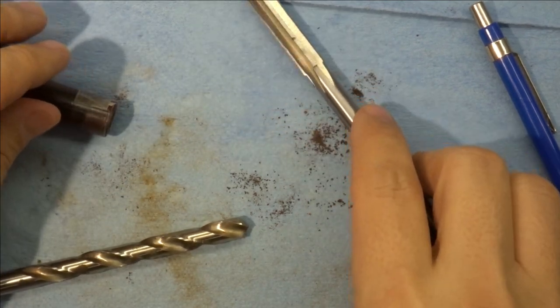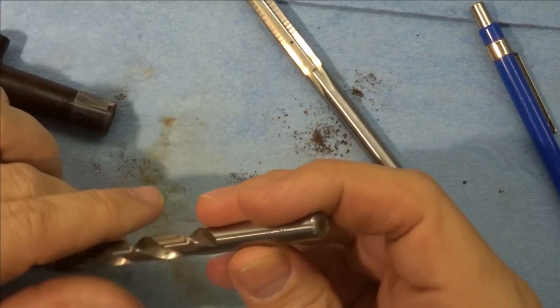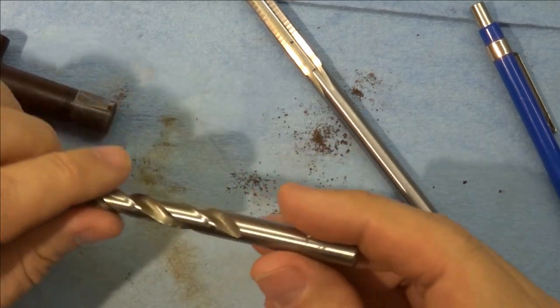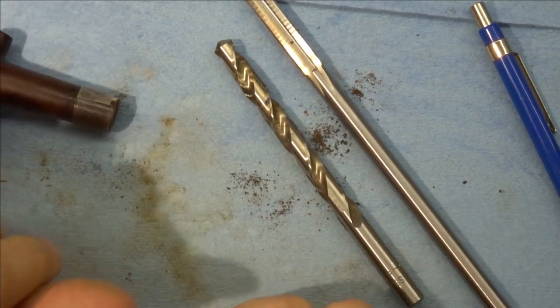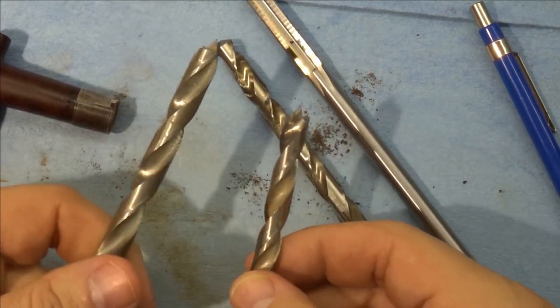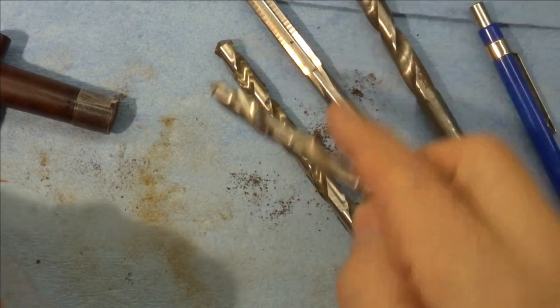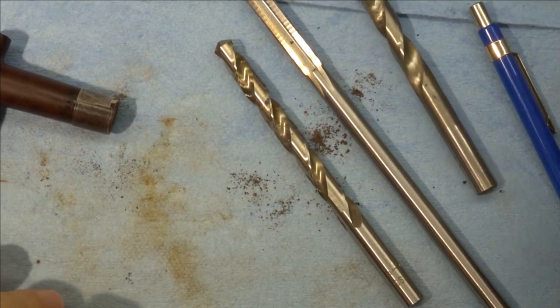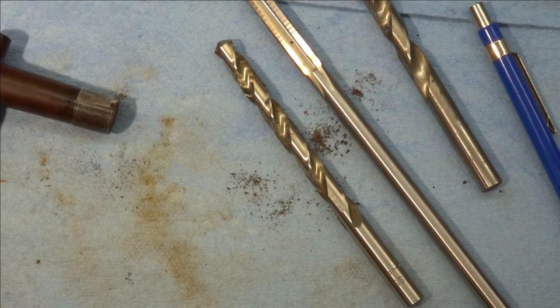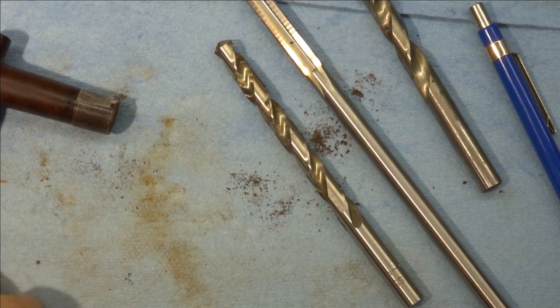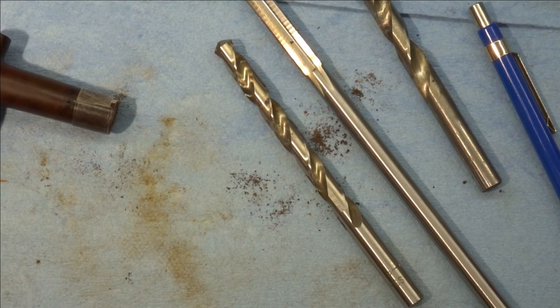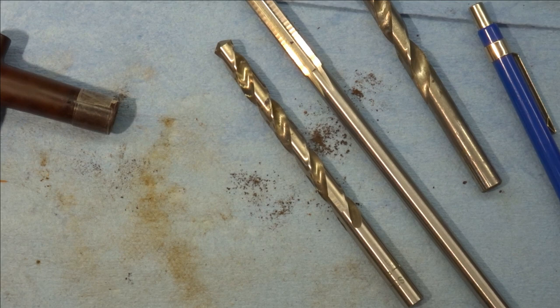So for 9mm, the correct drill that we would use prior to reaming is this guy here. This is a P, a letter drill. And we need to work our way up to that. So I've got here a 5/16ths and 11/32nds. And we're just going to go through that same process where I'm going to put them into the chuck and just very carefully work them in until they bottom out.